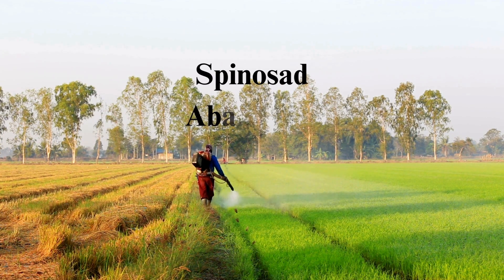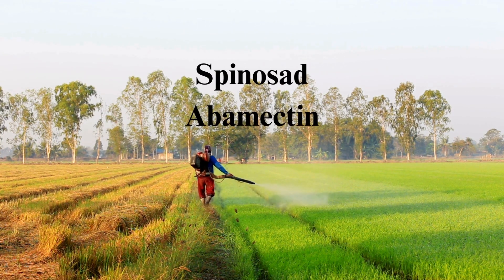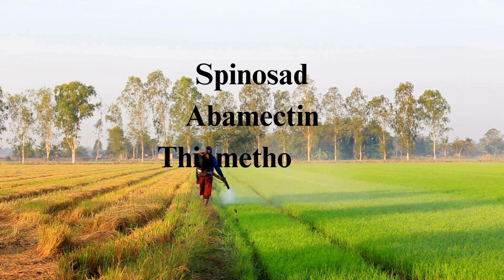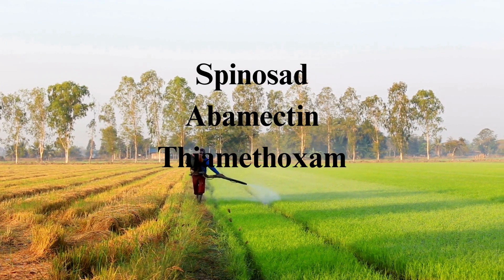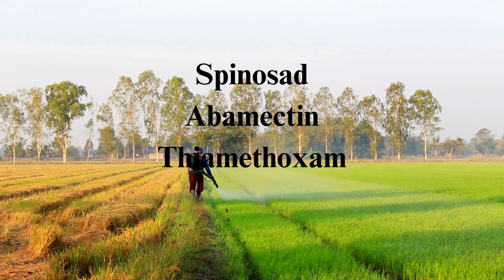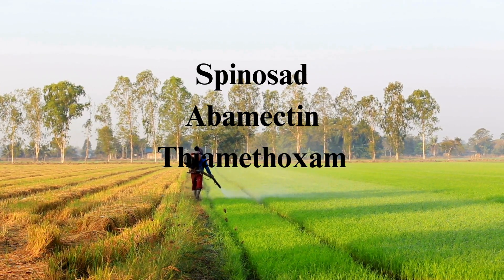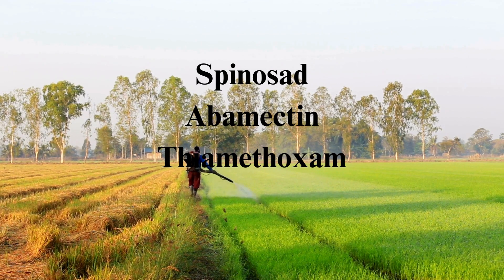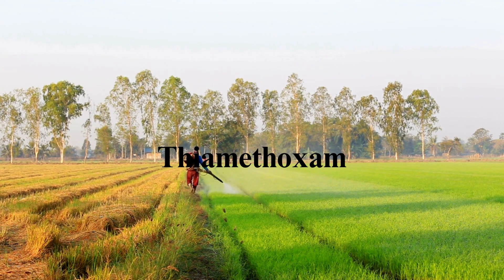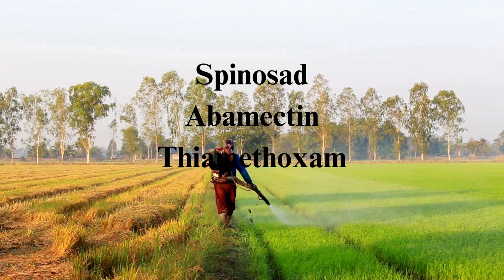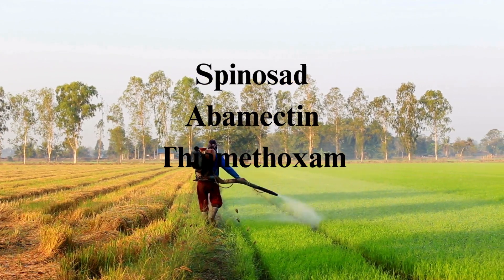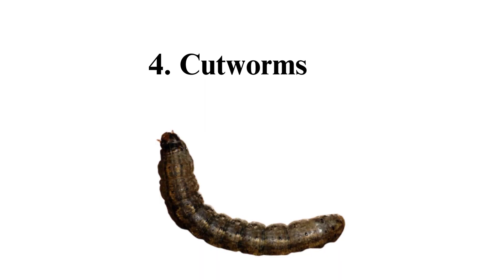Abamectin, derived from soil bacteria, interferes with nerve impulses, inducing paralysis and death. Thiamethoxam, a neonicotinoid, disrupts the nervous system of leafminers. These diverse mechanisms contribute to a comprehensive approach against allium leafminer.